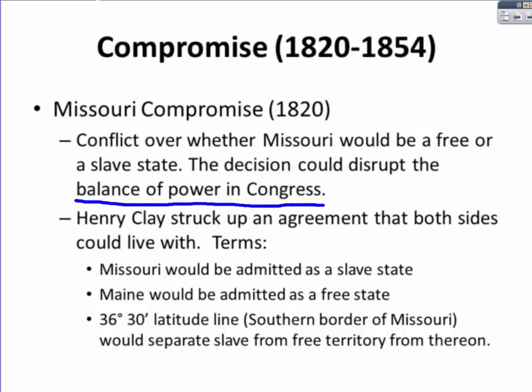So the balance of power in Congress is being addressed here. Henry Clay, known as the Great Compromiser, strikes up an agreement that both sides could live with. The terms were that Missouri would be admitted as a slave state, Maine would be admitted as a free state, and the 36-degree 30-minute latitude line, which was the southern border of Missouri, would separate slave from free territory from there on.